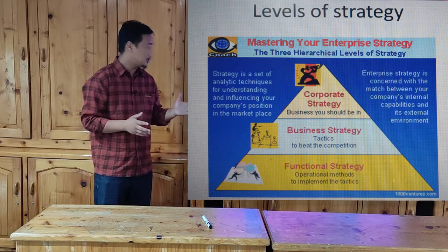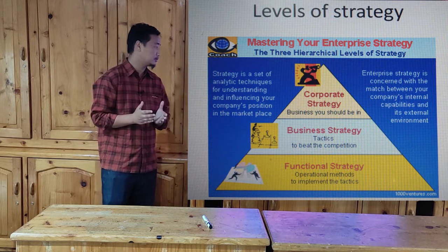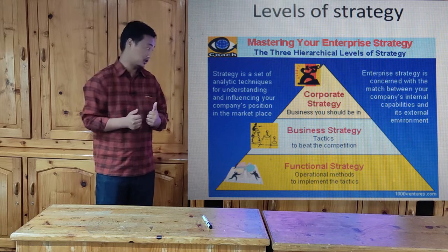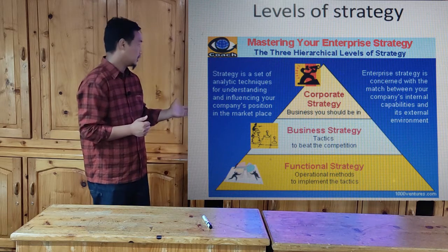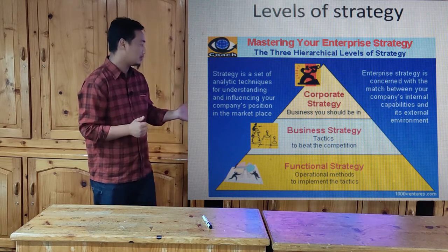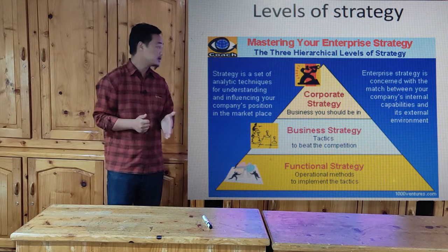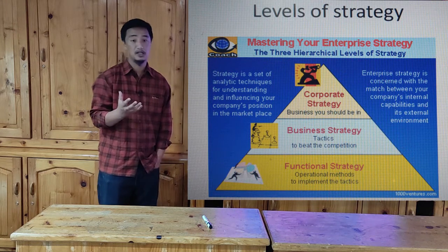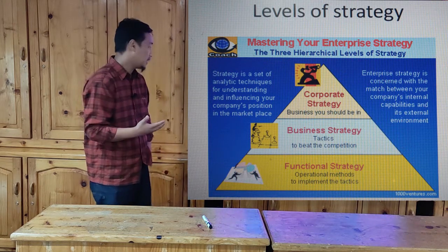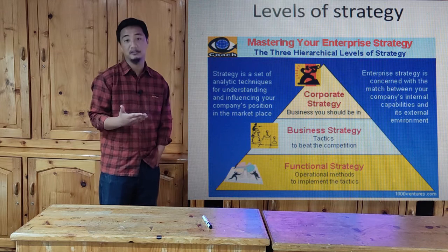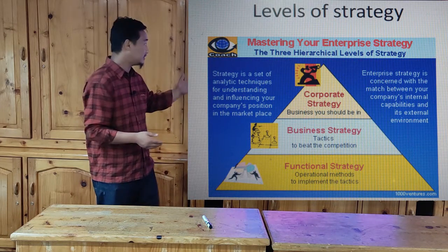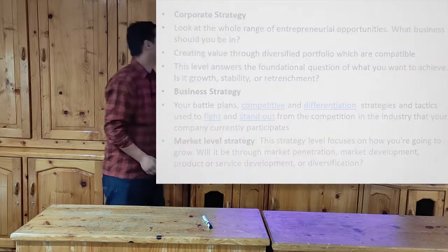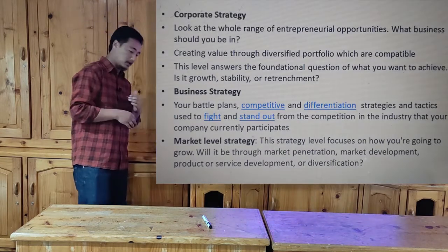In the business strategy, the company tries to build in tactics to beat the competition. Next we have the operational methods, which is the third level of strategy — how we are going to operate and how we are going to implement the business strategy. So these are the three levels of strategy, as you can see in the diagram.